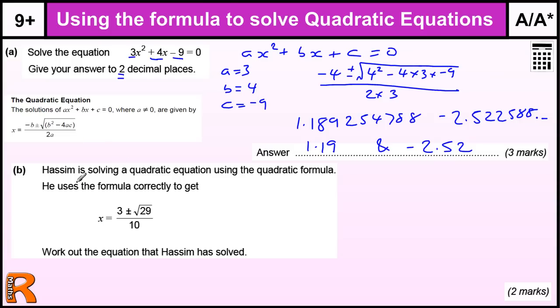Part B: Hassam is solving the equation using the formula. He uses the formula to get this. Work out the equation that Hassam solves. So this bit is our minus b. If we're doing something x squared minus b, minus b equals 3, so b equals negative 3, so it's going to be negative 3x, and then we've got a number equals 0.